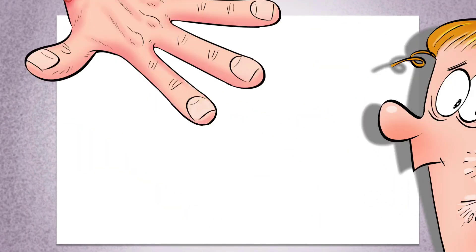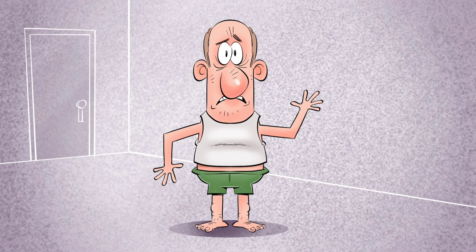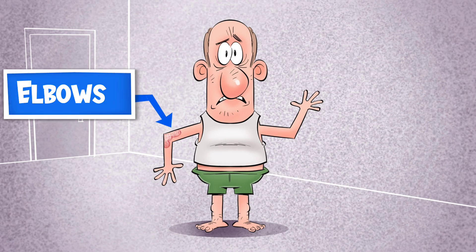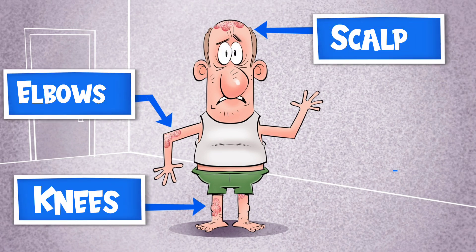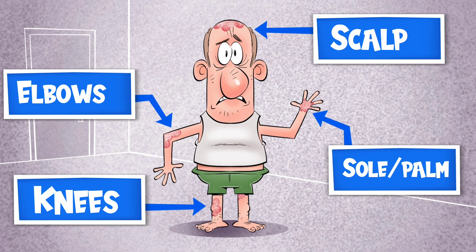leading to inflammation, thick scales and silvery flakes, especially in areas such as the elbows, knees, scalp and soles of the feet and hands. This particular form of the illness is known as plaque psoriasis.